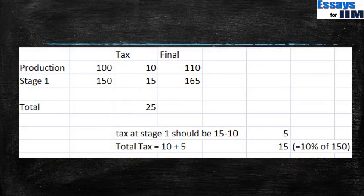Now, you might have heard a lot about value added tax, so let me explain what it really is. Let us say I produce a loaf of bread for Rs. 100, and the tax in all cases is 10%. So 10% of Rs. 100 is Rs. 10, and the final price is Rs. 110. This loaf of bread is then purchased by a baker who uses it to produce bread rolls, purchasing it for Rs. 110. He adds value and finally produces bread rolls worth Rs. 150.